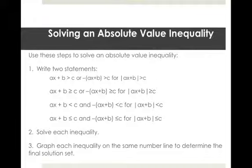For less than or equal to, you'll have AX plus B less than or equal to C, and negative quantity AX plus B less than or equal to C, for absolute value of AX plus B less than or equal to C. Then you're going to solve each inequality and graph each inequality on the same number line to determine the final solution set.